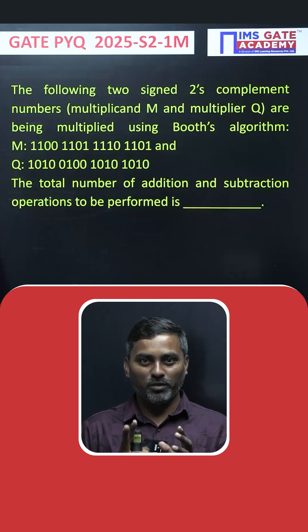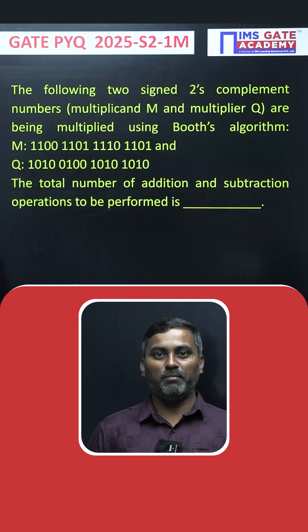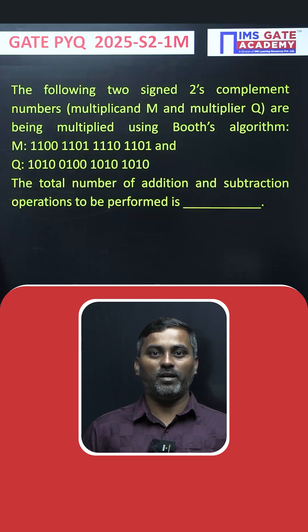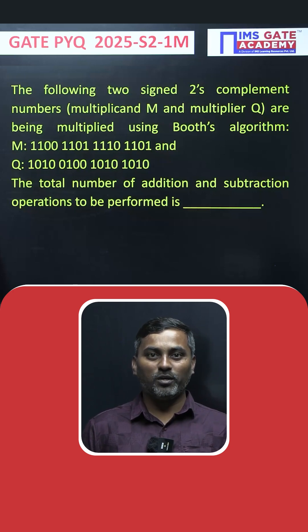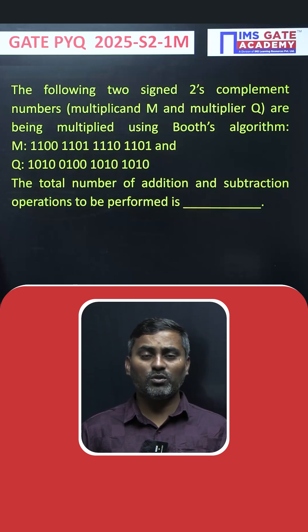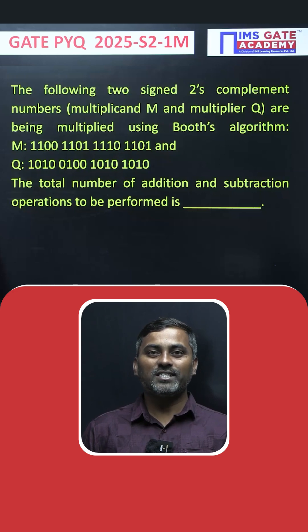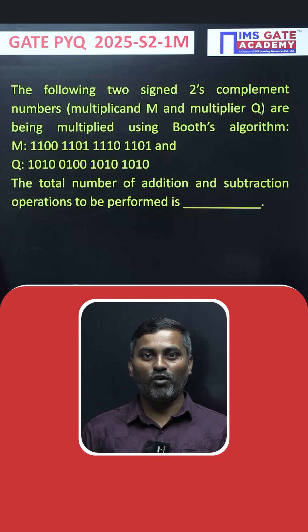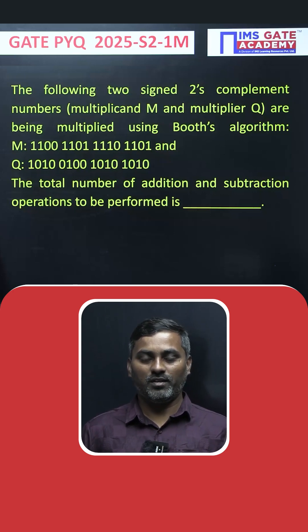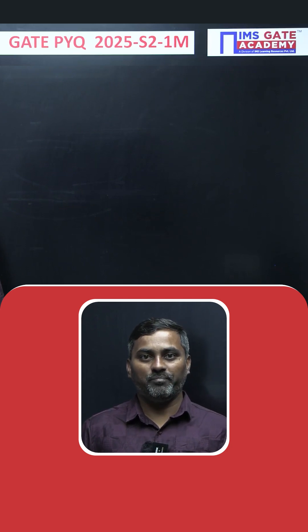In this question, two numbers are given: one is the multiplier and the other is the multiplicand — M and Q. These two numbers are multiplied using Booth's algorithm. The question is asking how many addition and subtraction operations are performed.